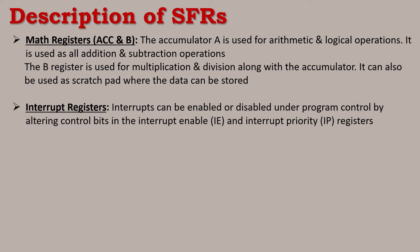Interrupt registers: interrupt enable and interrupt priority. Interrupts can be enabled or disabled under program control by altering control bits in the interrupt enable and interrupt priority registers. These registers are used to control interrupt behavior.